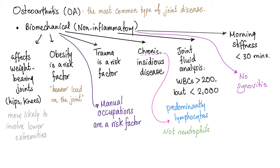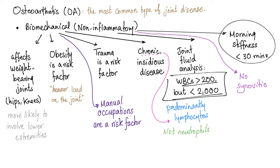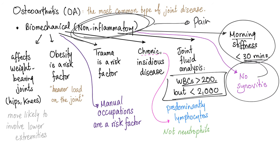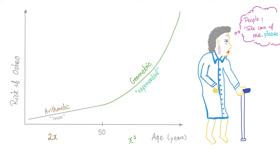Risk factors include obesity, trauma, and manual occupation. It's a chronic disease. Joint fluid analysis shows white blood cells more than 200 but less than 2,000 — normal is less than 200, and inflammatory is more than 2,000, so osteoarthritis is in between. Morning stiffness lasts less than 30 minutes because it's non-inflammatory. Pain predominates over stiffness. There is no synovitis, and your risk increases exponentially with age.